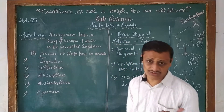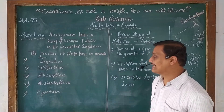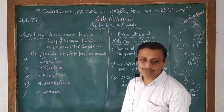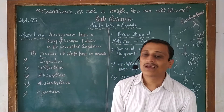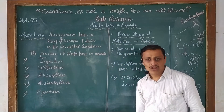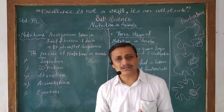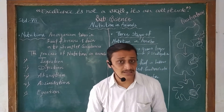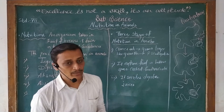The first stage is ingestion. The second one is digestion. Third is absorption. Fourth is assimilation. The fifth one is egestion. All these processes occur when the process of nutrition occurs inside the body of animals.